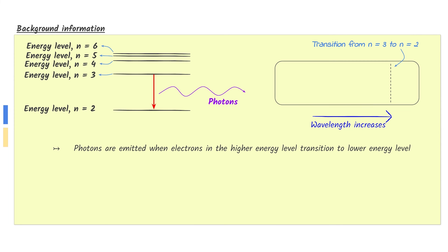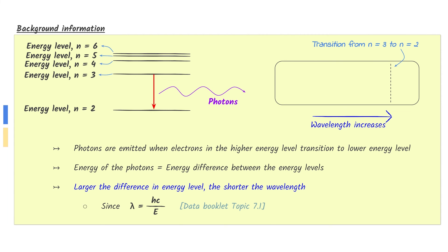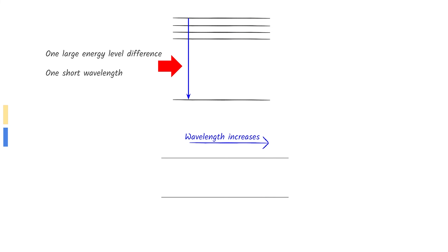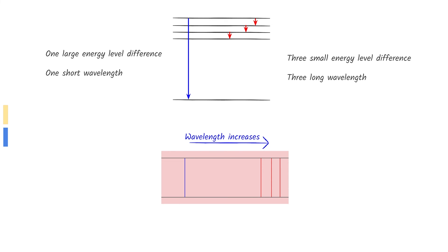Photons are emitted when electrons in a higher energy level transition to a lower energy level. The wavelength of the emitted photon can be seen on an emission spectrum. The energy of the photon equals the energy difference between the energy levels. This means that the larger the difference in energy levels, the shorter the wavelength of the photon. Here is another electron transition from a higher energy level. On the emission spectrum, the emitted photons have a shorter wavelength. There are three relatively small energy level differences, meaning we can expect to see three long wavelengths. There is one large energy level difference, meaning we can expect to see one short wavelength.